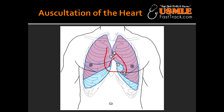What type of murmurs can be heard at the mitral area? At the mitral area you could hear a systolic murmur and a diastolic murmur. Systolic murmur at the mitral area can be caused by mitral regurgitation, while diastolic murmur at the mitral area is caused by mitral stenosis.